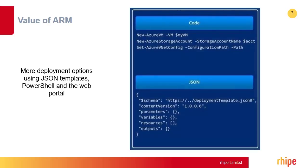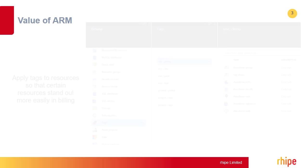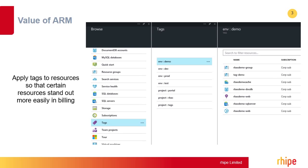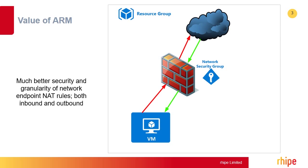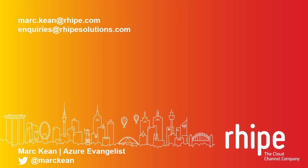More deployment options using JSON templates, PowerShell, and the web portal. More flexibility to make changes to resources without having to shut down the virtual machine. Apply tags to resources so that certain resources stand out more easily in billing. And much better security and granularity of network endpoint NAT rules, both inbound and outbound. To start using the tool today, please contact mark.keen@ripe.com or inquiries@ripesolutions.com.